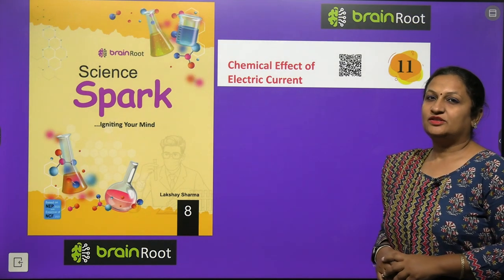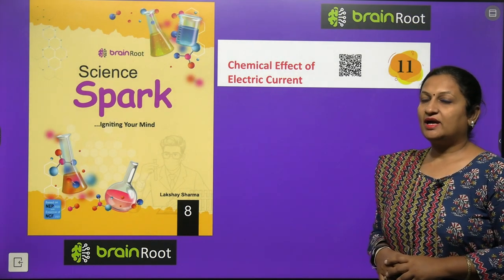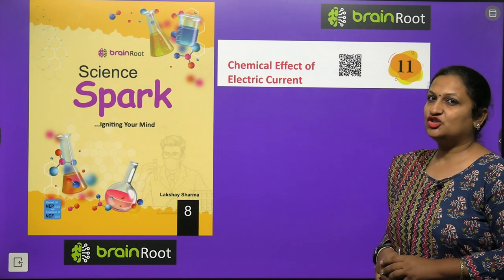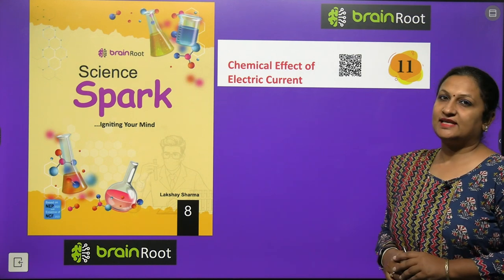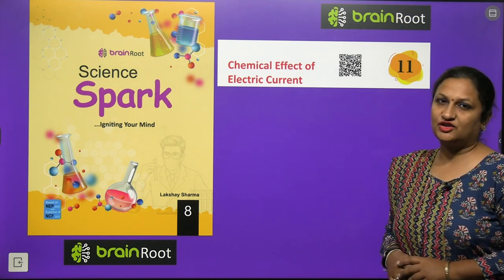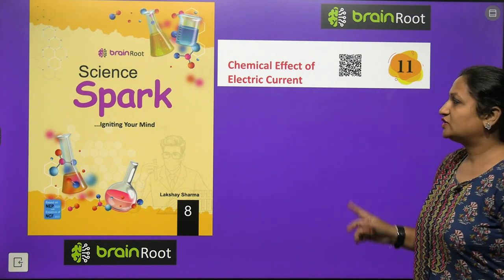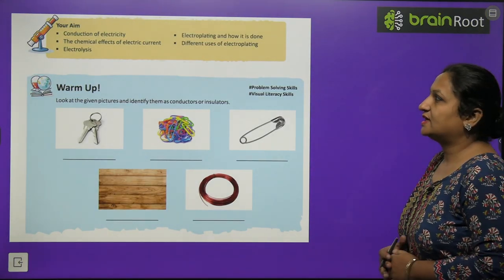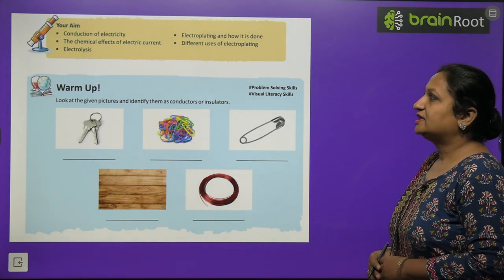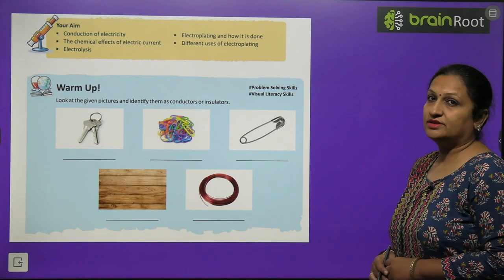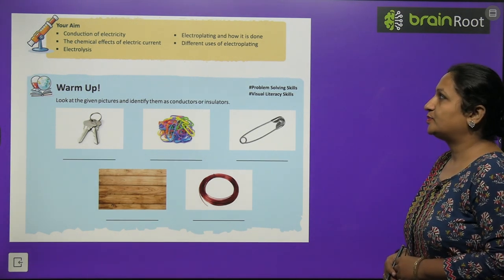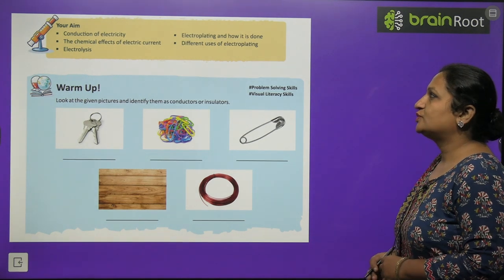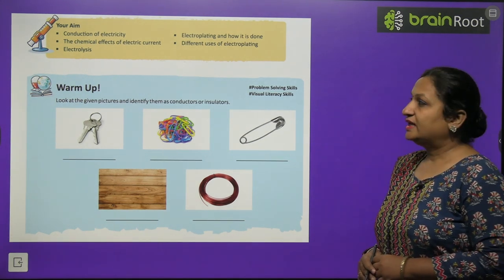Hello, my dear children. This is Shikha Arora, and today we are going to start with Class 8 Science Chapter 11, that is Chemical Effects of Electric Current. The main aims of this chapter are conduction of electricity, chemical effects of electric current, electrolysis, electroplating, and the different uses of electroplating.